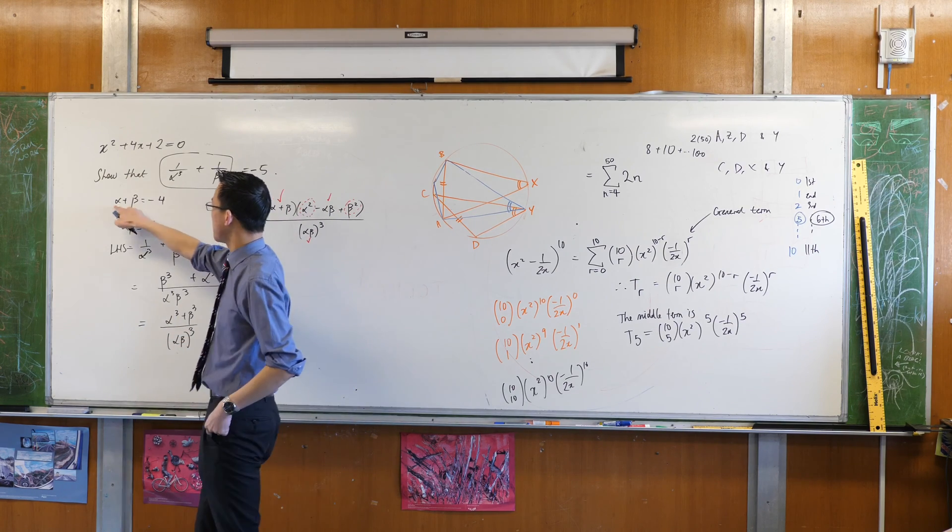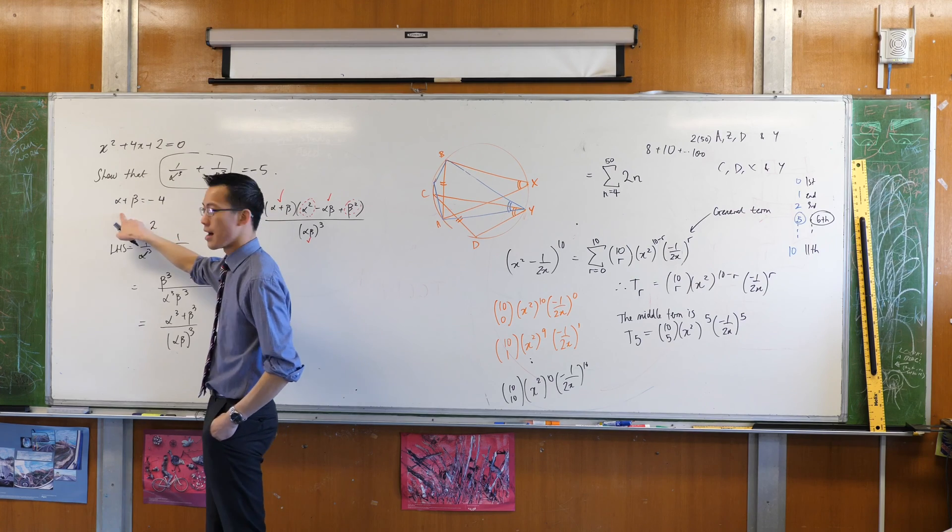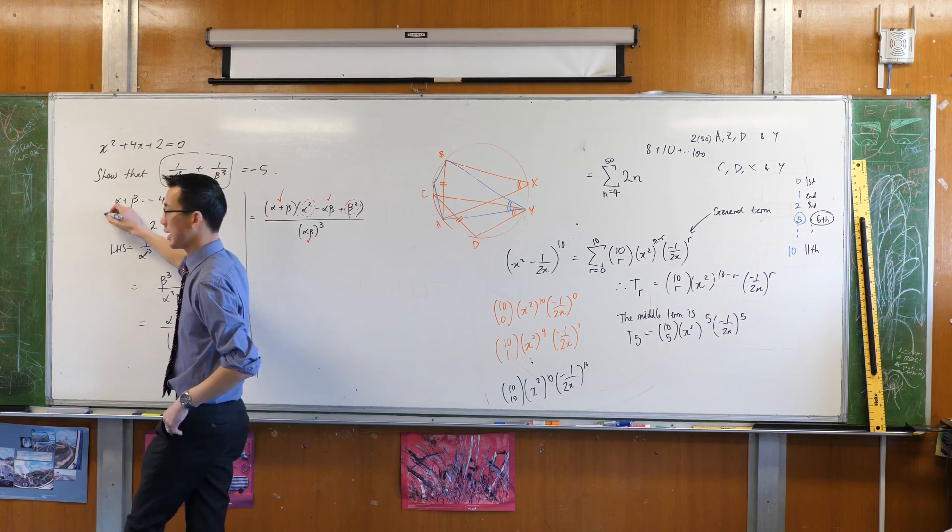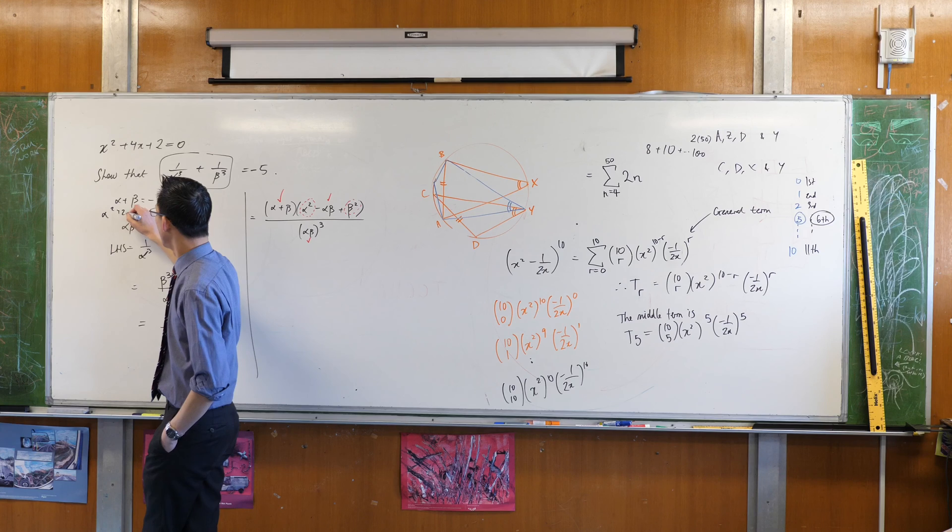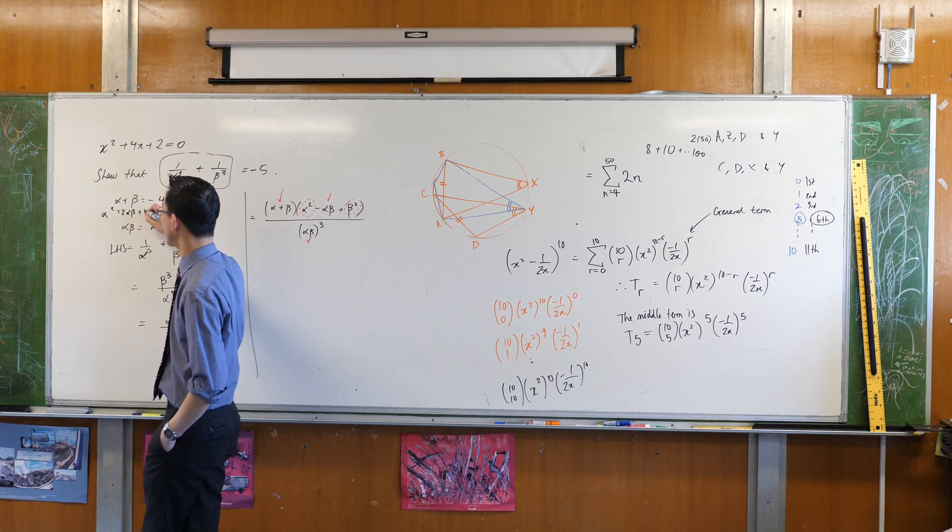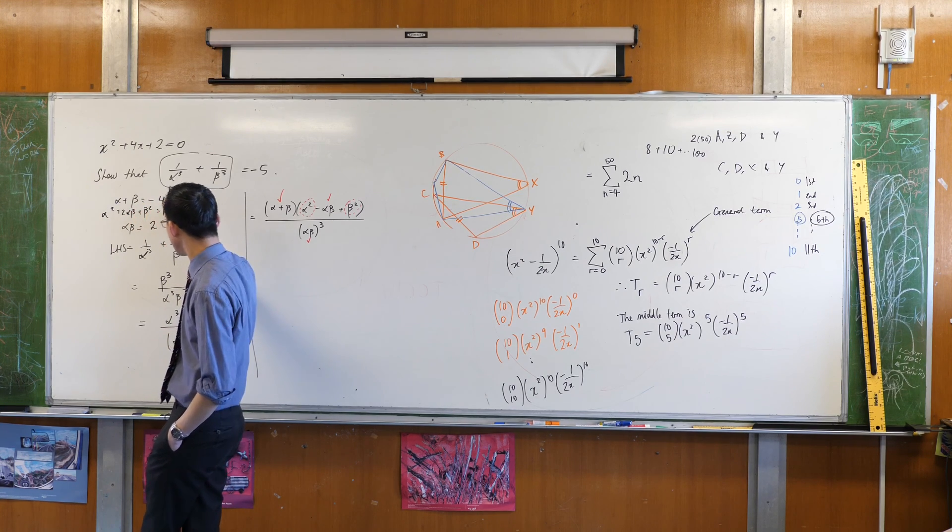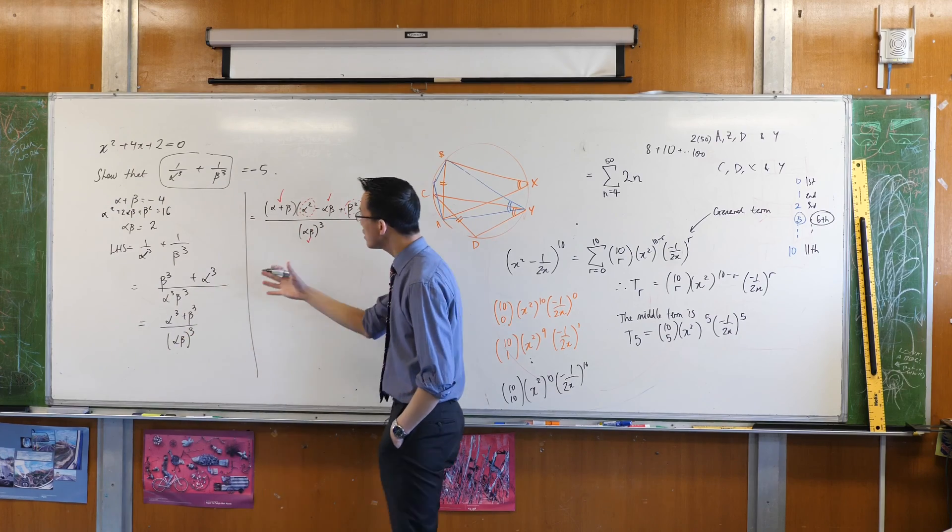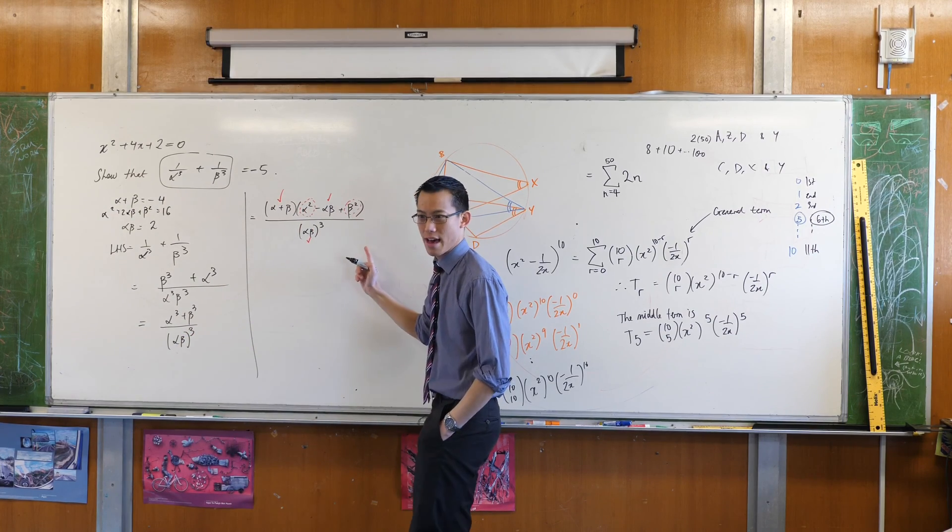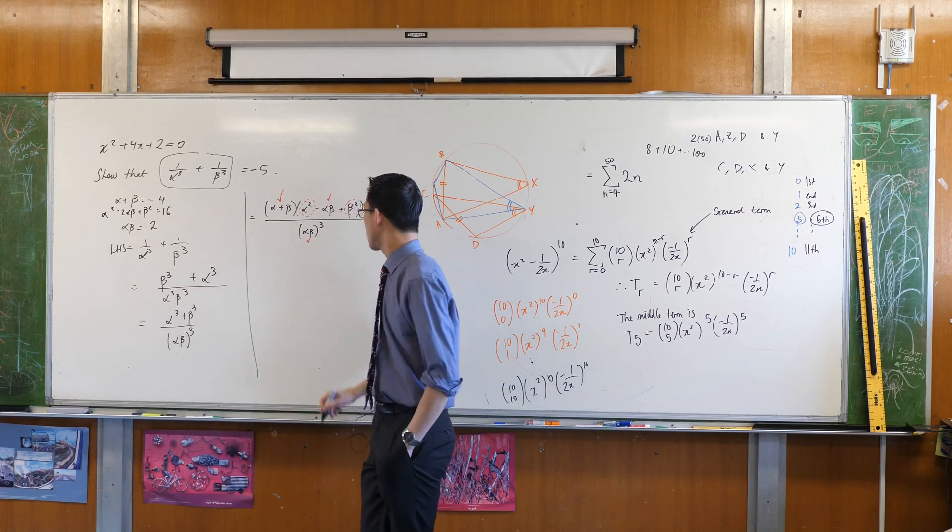So if I squared this on the left-hand side, if I expand it all out, what would I get? Alpha squared plus two alpha beta plus beta squared. Do you agree? And that's 16. Okay. Now I actually don't quite have that, but I've got something very close to that. Watch this.